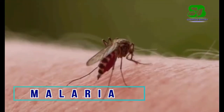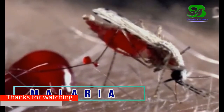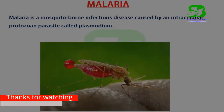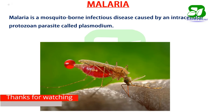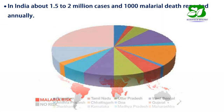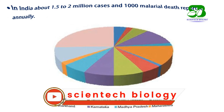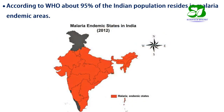Malaria is a mosquito-borne infectious disease caused by Plasmodium. Every year, malaria affects more than 500 million people and kills more than 1 million people. In India, about 1.5 to 2 million cases of malaria are reported each year. According to the World Health Organization, 95% of the Indian population resides in malaria endemic areas.